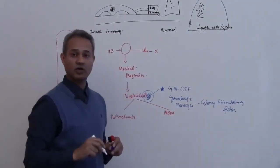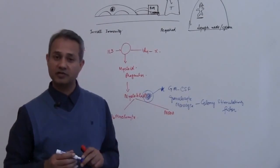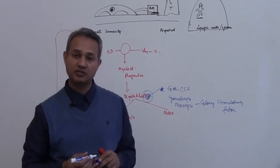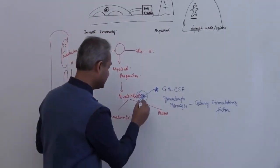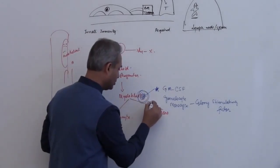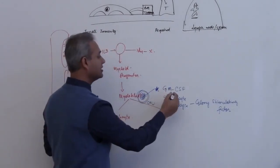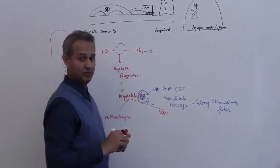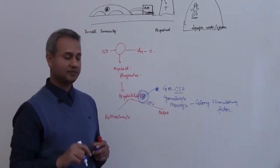And why do we call them colony stimulating factor or colony forming units. The cell here, this cell here is called colony forming unit and the chemical substance here is called colony stimulating factor. What does that mean?